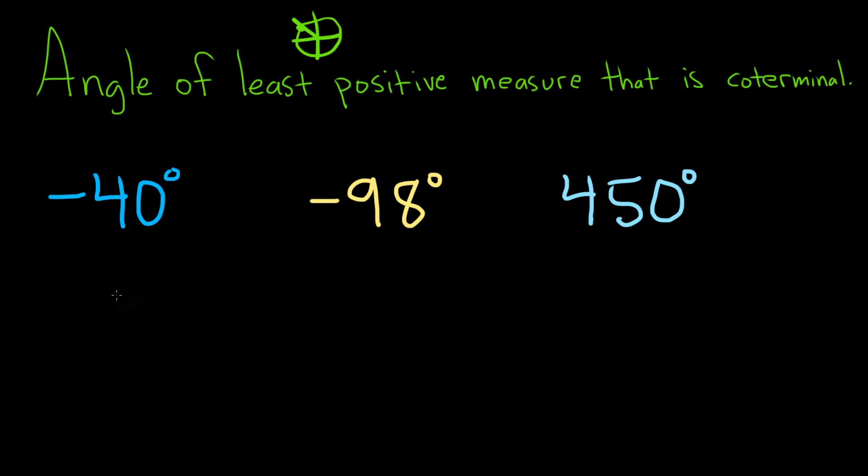So let's work on negative 40 first. The natural thing to do is just add 360 to it. So if we do negative 40 plus 360, we get 320. And that gives us the positive part. We want a positive angle. If we add another 360, it's going to be bigger. So this must be the angle of least positive measure that is coterminal.